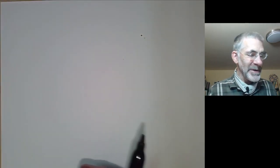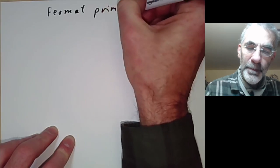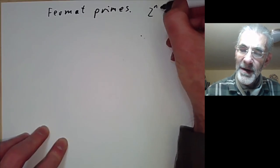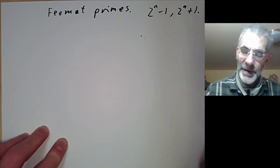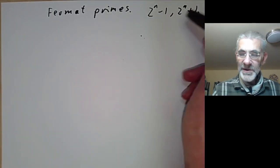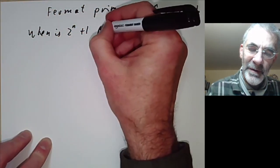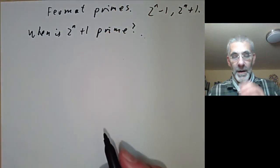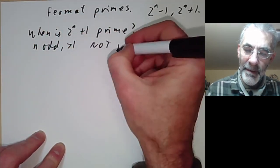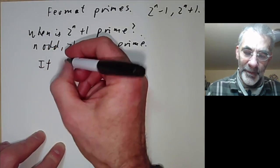Now let's discuss Fermat primes. Early number theorists looked for primes of the form 2 to the n minus 1 (called Mersenne primes) or 2 to the n plus 1 (called Fermat primes). Let's study Fermat primes — when is 2 to the n plus 1 prime? First, if n is odd and greater than 1, then it's not prime.